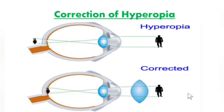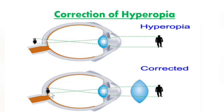In order to correct this long sightedness, we use a convex lens. A convex lens is a converging lens, and it actually brings — or converges — the light rays onto the retina. As a result, the hyperopic person is able to see near objects clearly, with the image now forming on the retina.